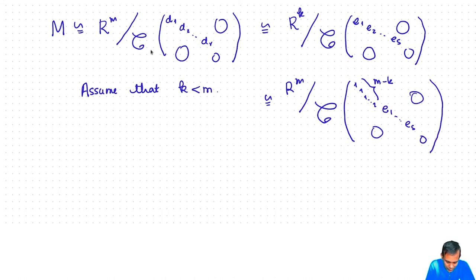So what we have is now that M is isomorphic to R^m mod the column space of this matrix or R^m mod the column space of this matrix. But we have already shown that R^m mod column space of A is isomorphic to R^m mod column space of B if and only if A is equivalent to B. That would mean that this matrix d₁, d₂, ..., dᵣ is equivalent to this matrix with a bunch of ones and then e₁, e₂, ..., eₛ. But by the uniqueness of Smith canonical form this means that these two matrices are actually equal. And since we have assumed that d₁ is a proper ideal of R, d₁ is not a unit. This implies that m minus k is 0.